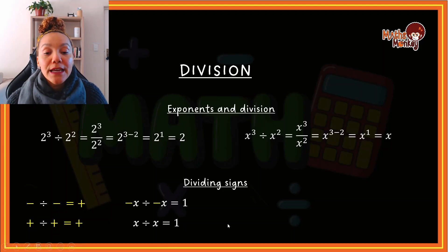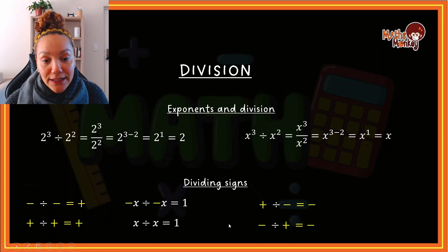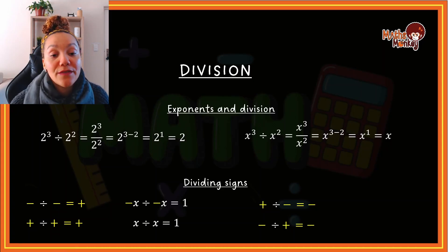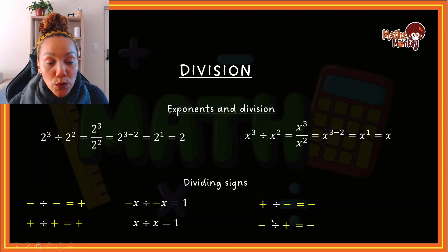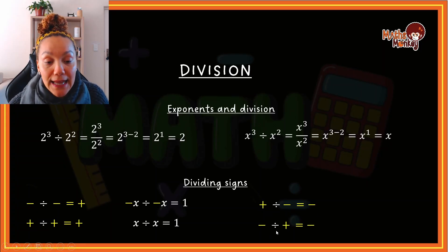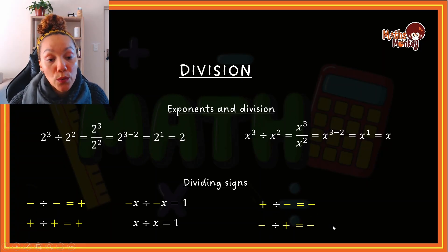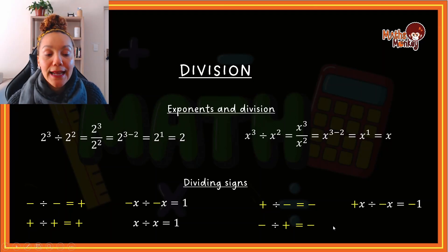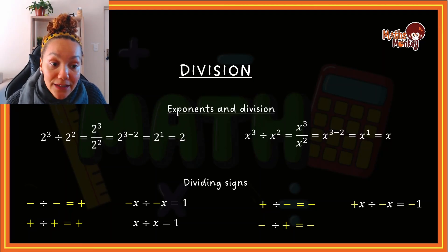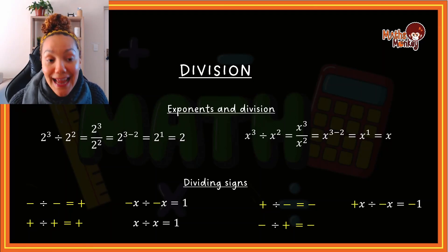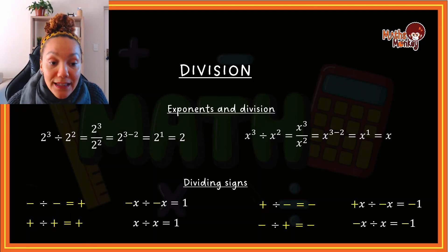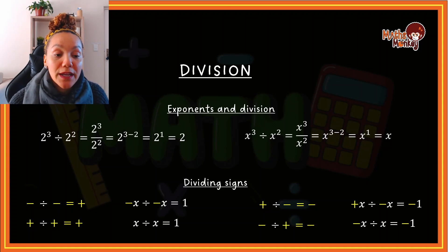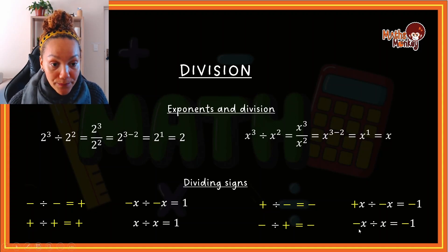If the signs are different, the answer will always be negative — whether it's a positive divided by a negative, or a negative divided by a positive. So positive x divided by negative x will be negative one, and negative x divided by positive x will also be negative one.